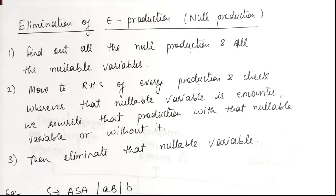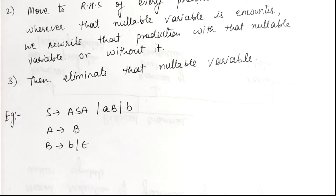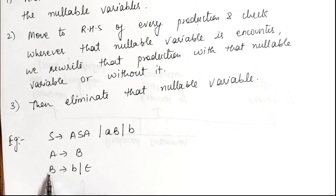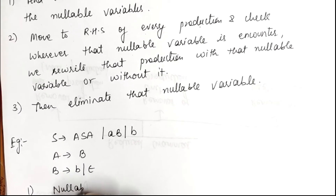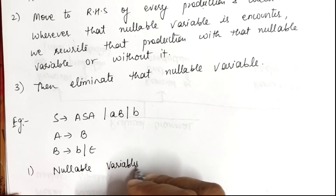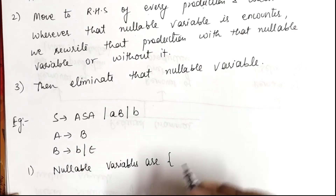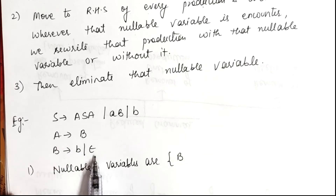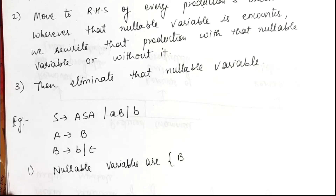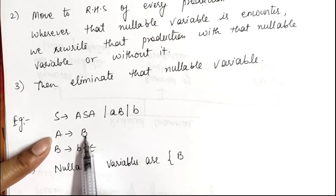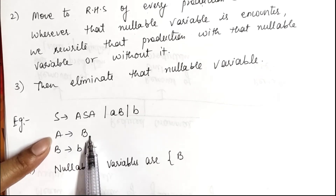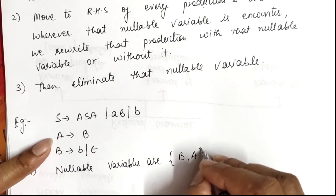Let's look at an example: S derives A S A or A B, A derives B or B derives small b or epsilon. The first step is to find the null production. Here, capital B derives epsilon, so B is a nullable variable. B derives epsilon is a direct nullable variable, but we also check indirectly — if A derives B and we substitute B as epsilon, then A can also derive epsilon. So A is also a nullable variable.